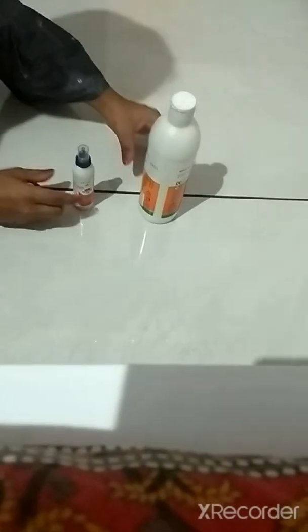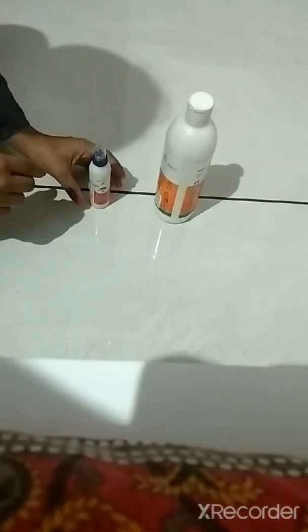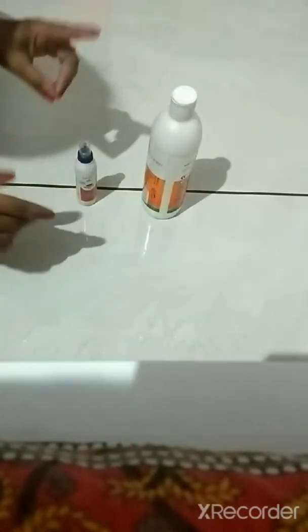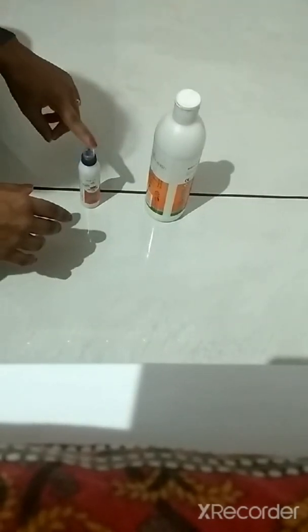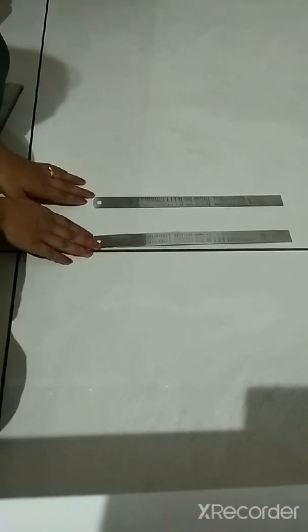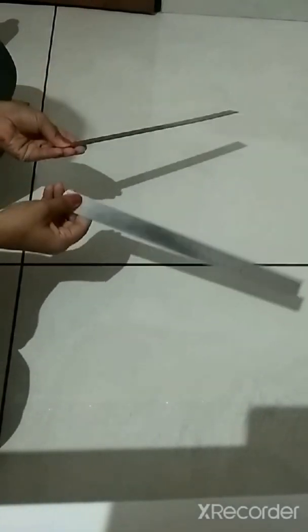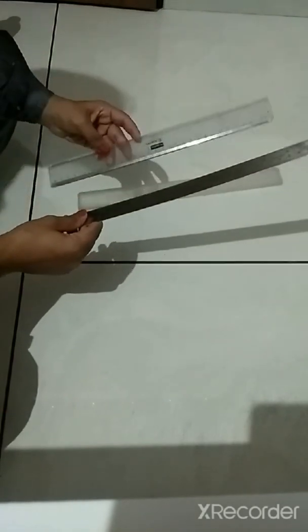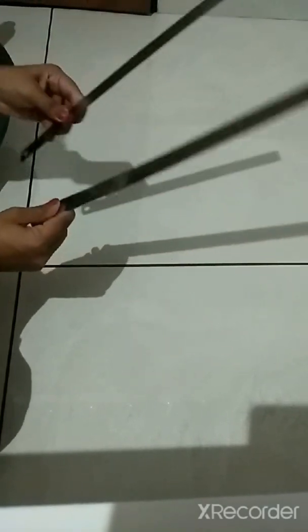Now look at these favicol bottles. Are both the bottles same? No, these both bottles are different. This bottle is big and this bottle is small. Yeh bottle badi hai ar yeh bottle chhoti hai. Big, small. Now look at these scales. Both scales are same. But these two scales are different. So different and same.